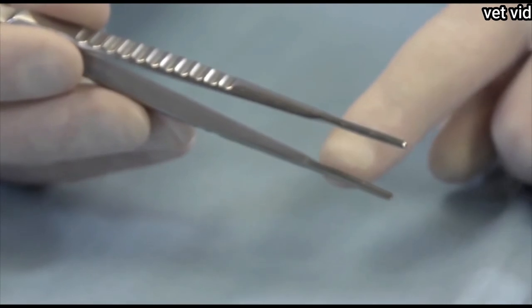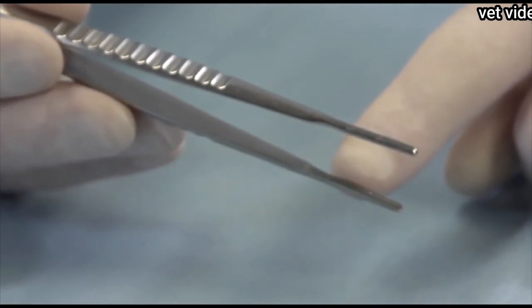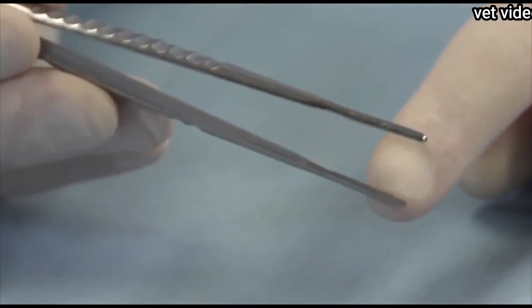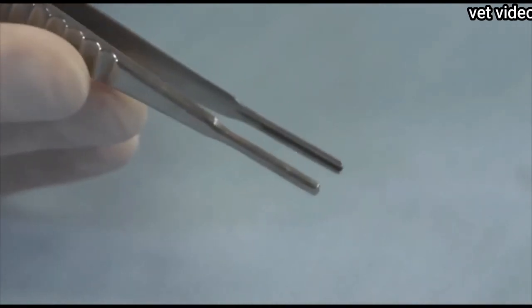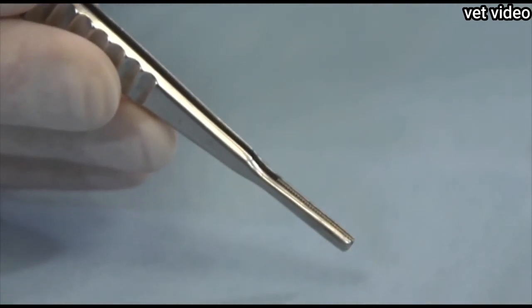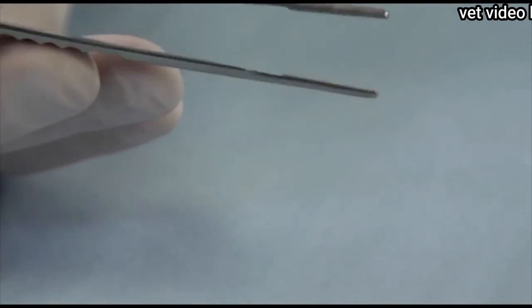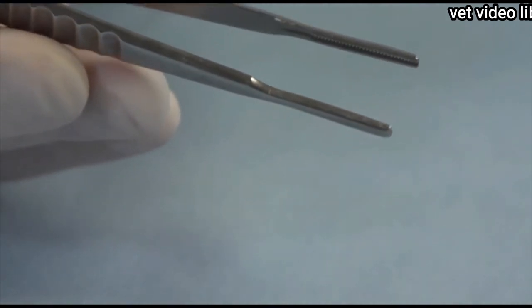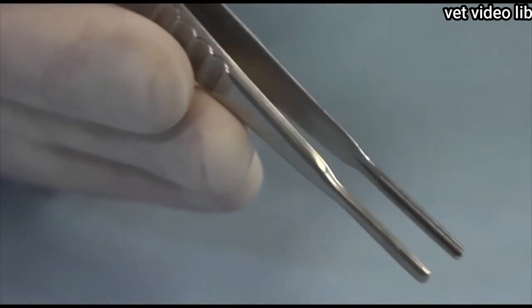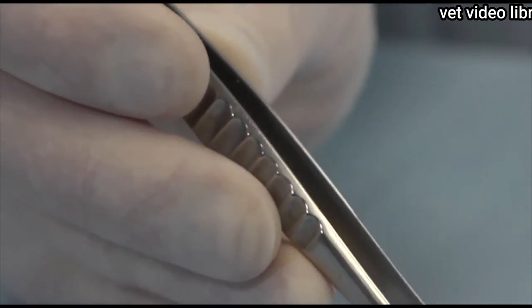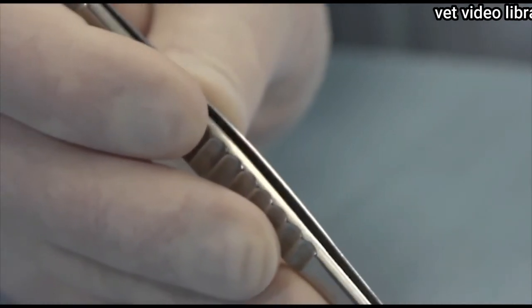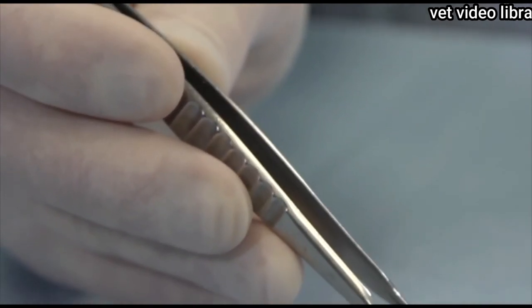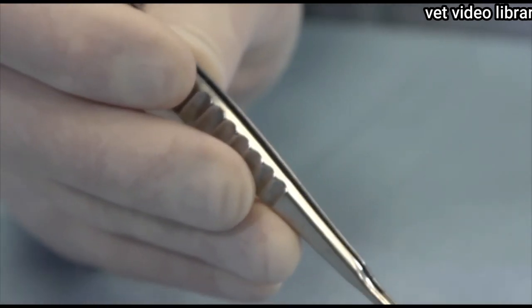What makes them DeBakey thumb forceps is that the jaws on the graspers are atraumatic. It's used for grasping delicate tissue and it's held between my thumb and my index, middle, and ring fingers. Using all three of these fingers helps control the grasp and the amount of compression on the tissue.